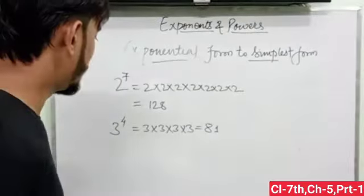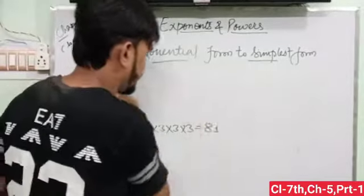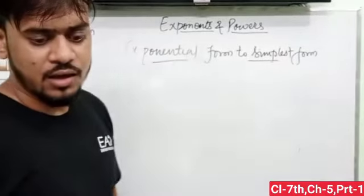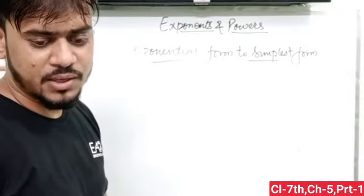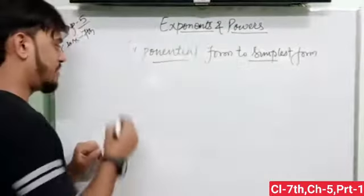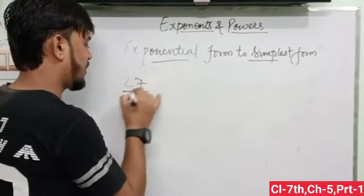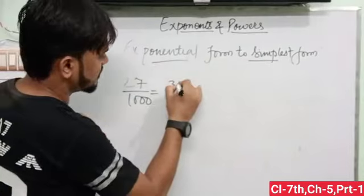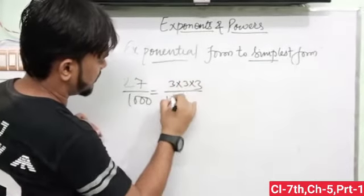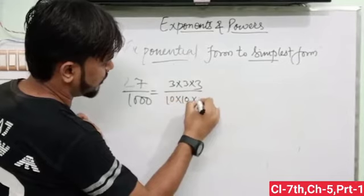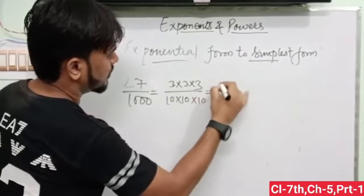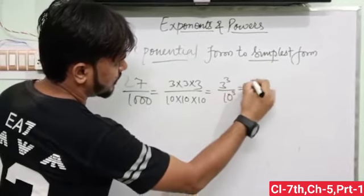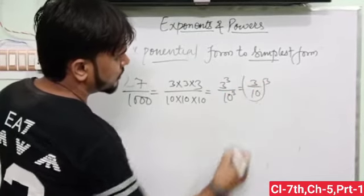Now we have some question from your book, exercise 5.1. Express the following rational number in exponential notation. We have number 27 upon 1000, then 27 that means 3 into 3 into 3, and that 1000 will be 10 into 10 into 10. This is 3 to the power 3 and 10 to the power 3, that means 3 upon 10 to the power 3.